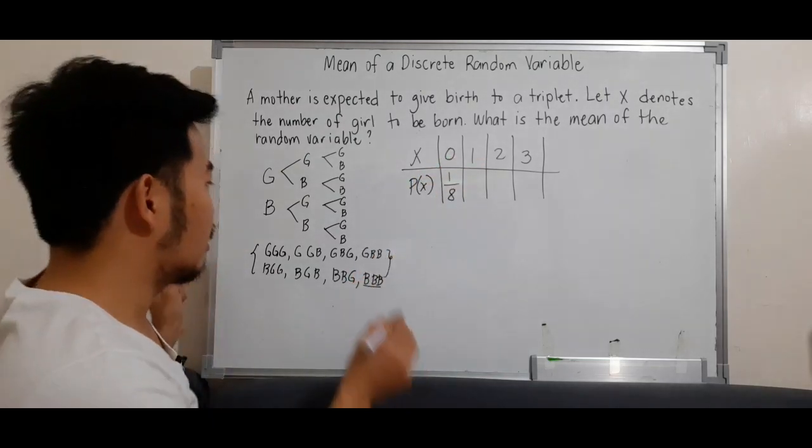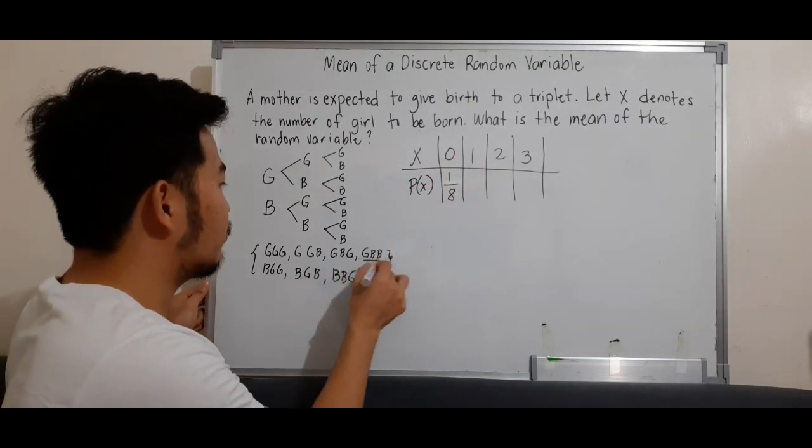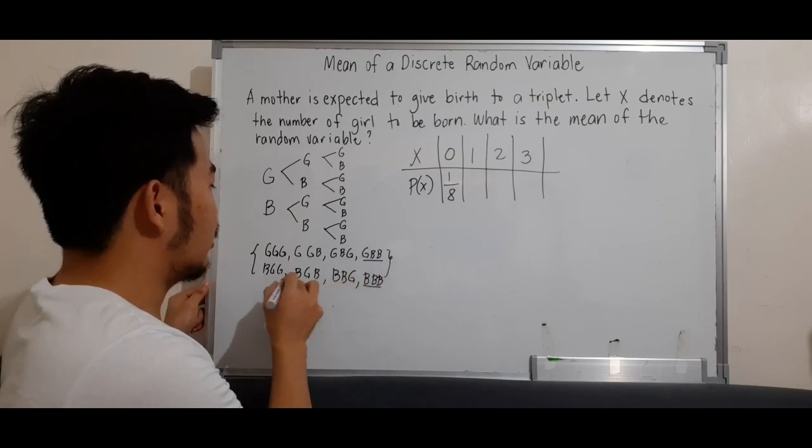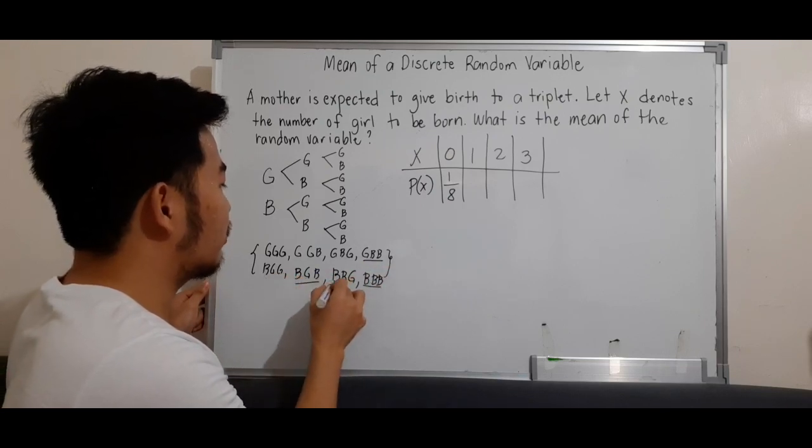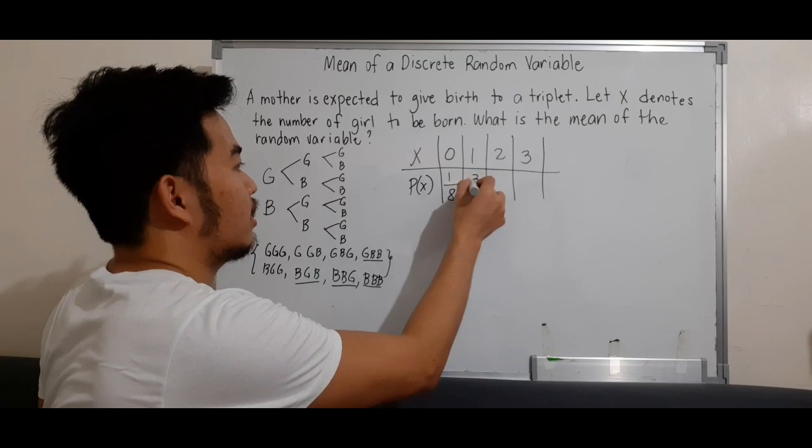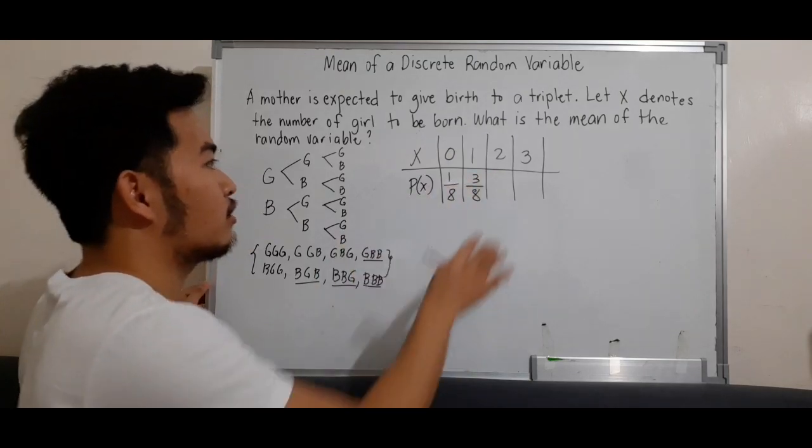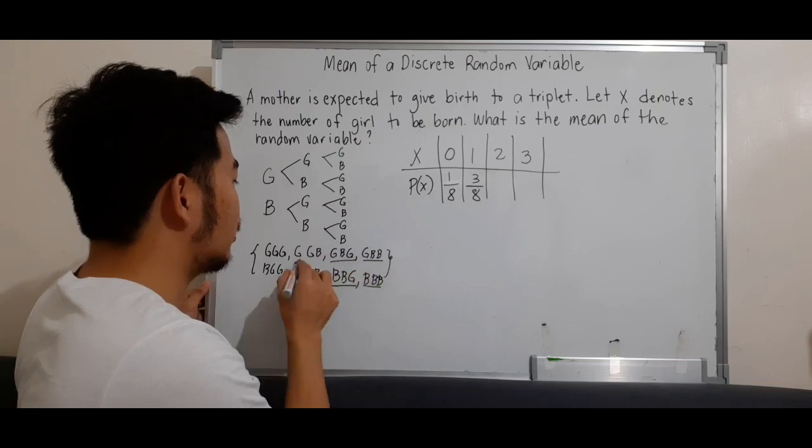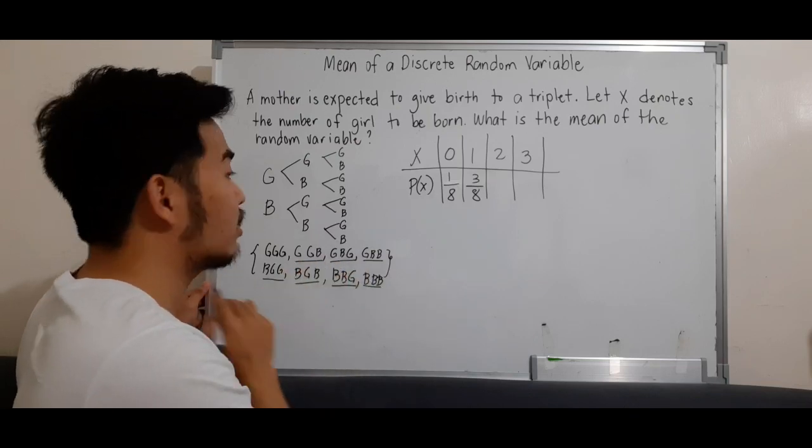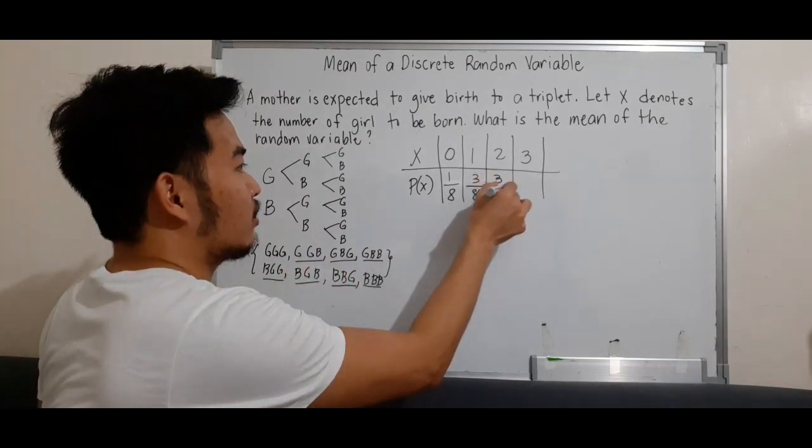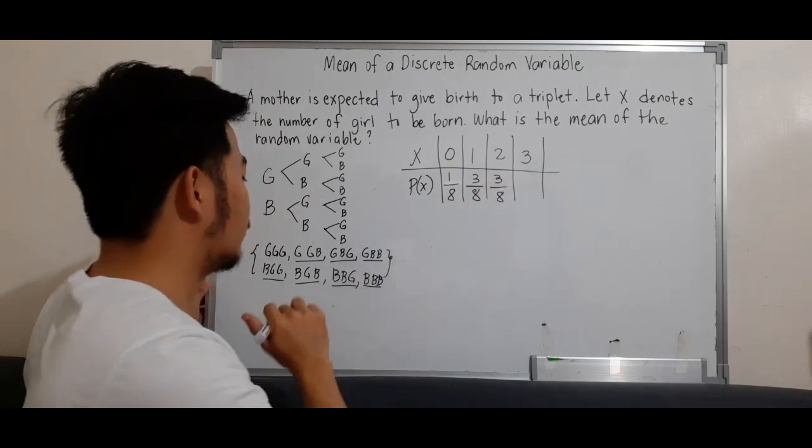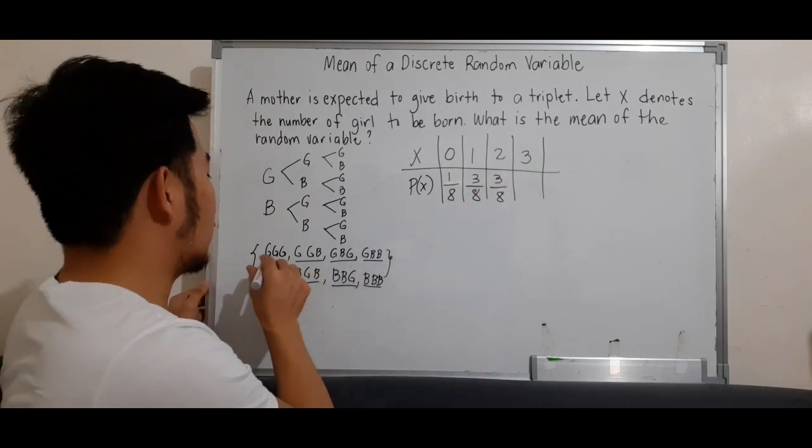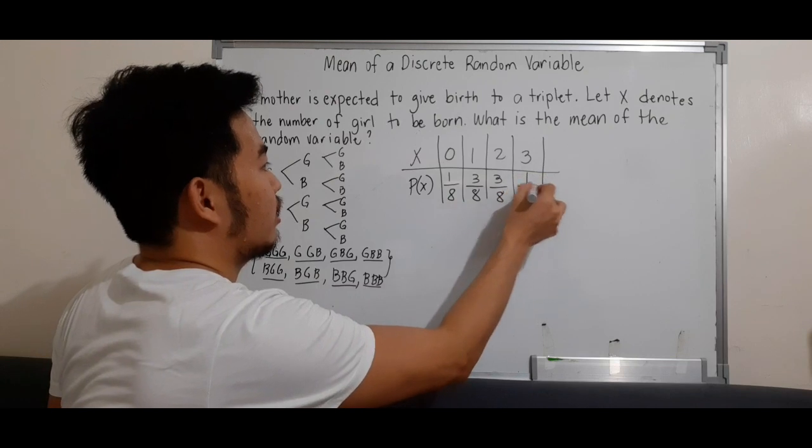Next, the probability of one girl. We have girl, boy, boy—that's one. Boy, girl, boy—two. And boy, boy, girl—three. So we have 3 out of 8. For two girls, we have girl, boy, girl, girl, girl, boy, and boy, girl, girl. So 3 out of 8. And when we have three girls, there's only one: 1 out of 8.